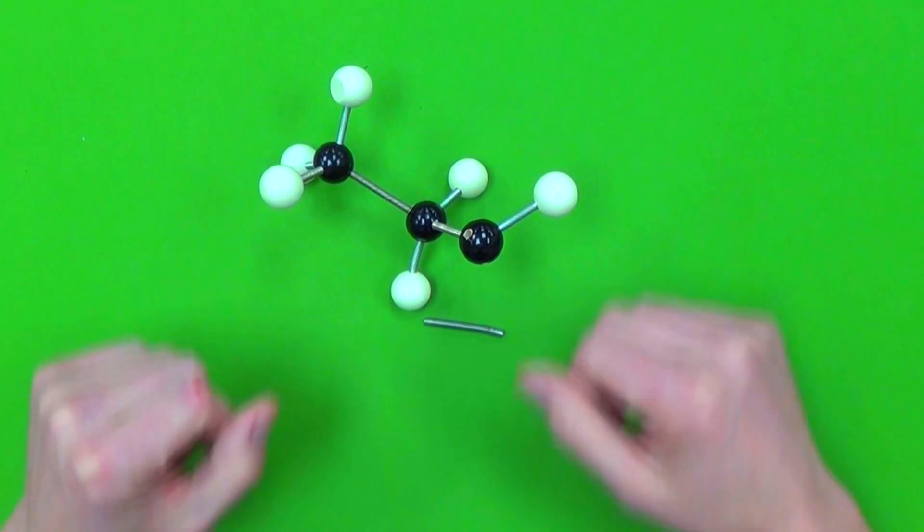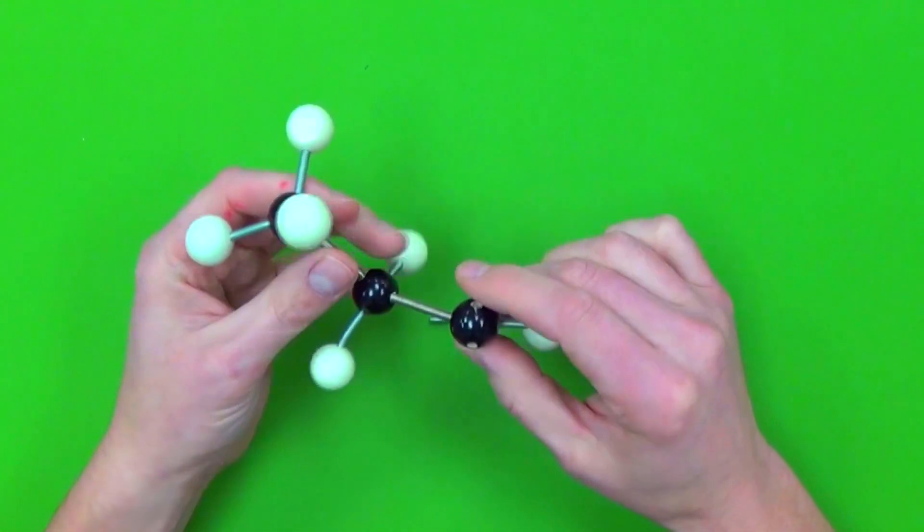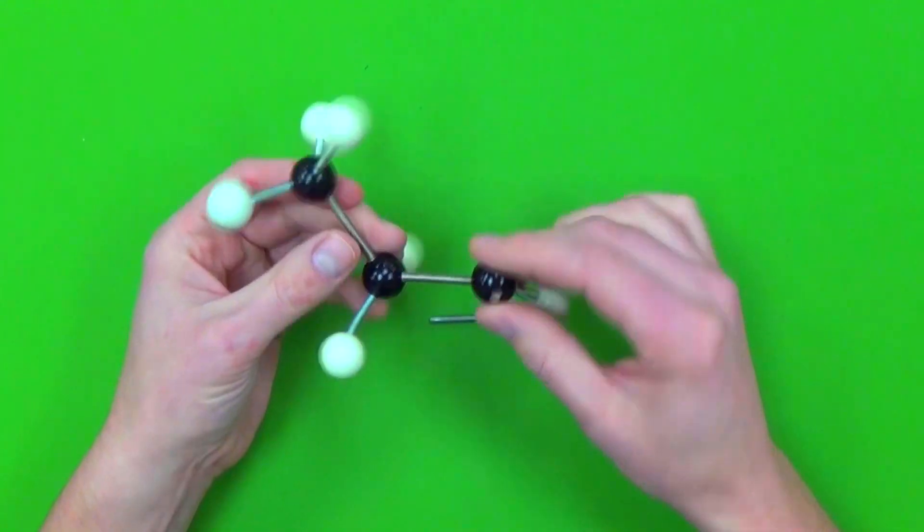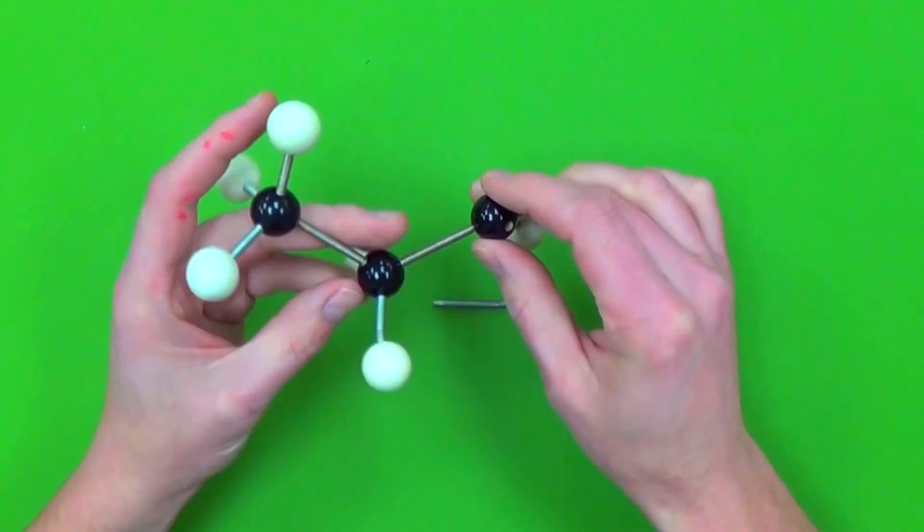And look at that. Except there's one small problem. Remember, all carbons have to have four bonds around them. You've still got one of those bonds left over. So what are you gonna do?